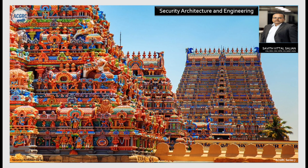In Phase 1, we set the groundwork with core concepts. We unpack security models like Bell-LaPadula, Biba, and Clark-Wilson. We understand system architecture and its principles including the Trusted Computing Base and the reference monitors. We will explore preventive, detective and corrective controls, evaluate systems through Common Criteria, TCSEC and ITSEC, and delve into cryptographic design and secure system components like hardware, firmware and software.